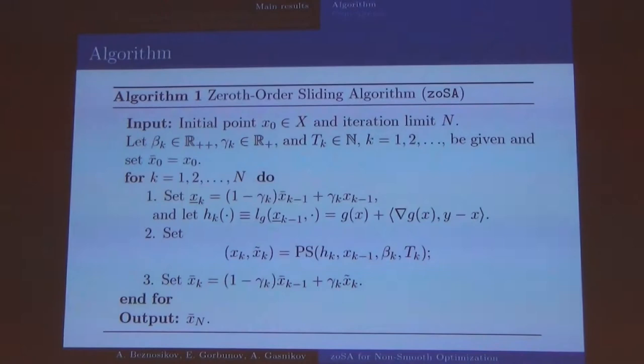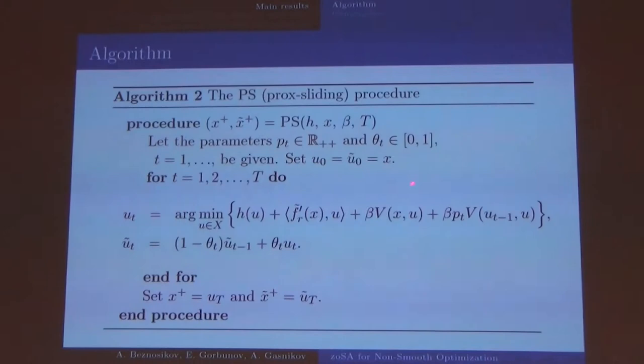To solve this problem we use the modification of sliding, gradient sliding. Here is the external procedure when we compute the gradient g and gave it to the internal procedure where we use this gradient in this function. And change only gradient, stochastic gradient of the function f. And make some iteration with frozen gradient of g and change only this one.